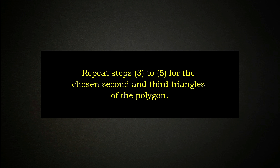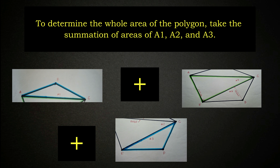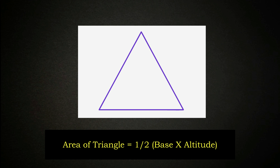Repeat steps 3 to 5 for the chosen second and third triangles of the polygon. To determine the whole area of the polygon, take the summation of areas A1, A2, and A3. The area of a triangle is equal to one-half times base times altitude.